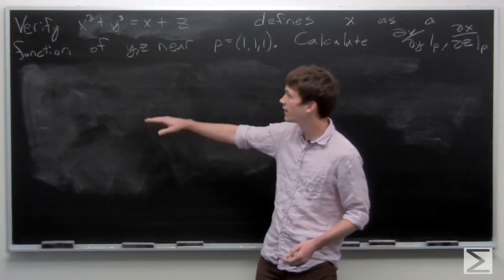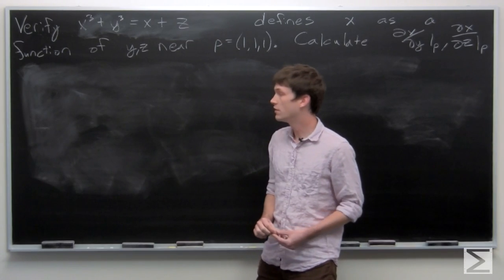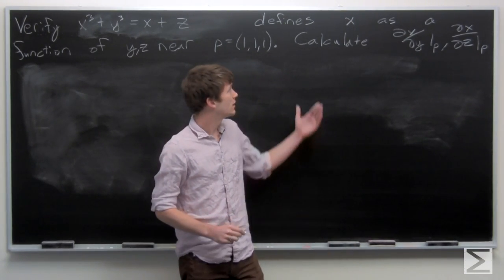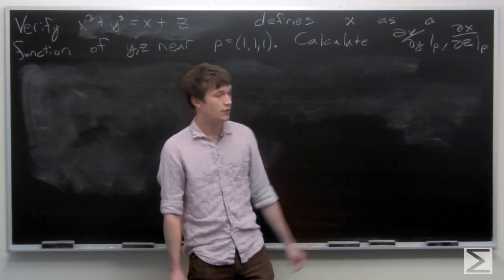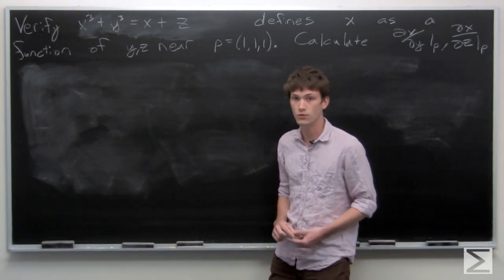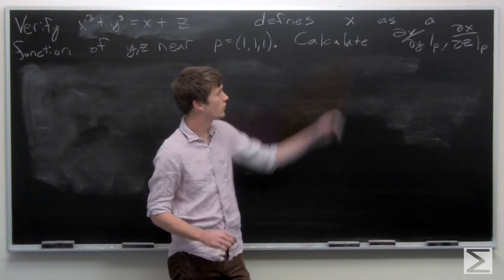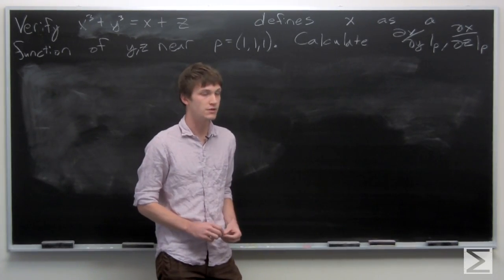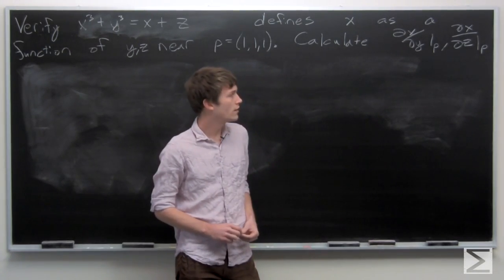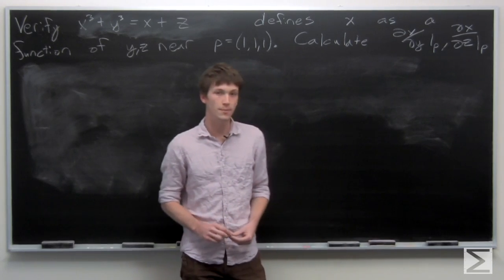In this problem, we're asked to verify that x cubed plus y cubed equals x plus z defines x as a function of y and z near the point p equals (1, 1, 1). And then after doing so, we are asked to calculate the partial derivative of x with respect to y at p and the partial derivative of x with respect to z at p.